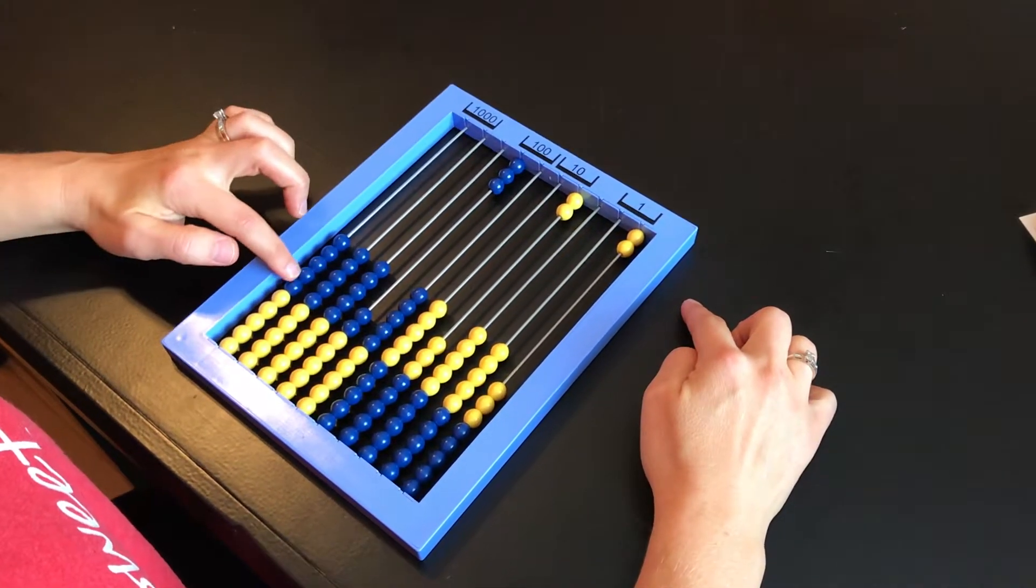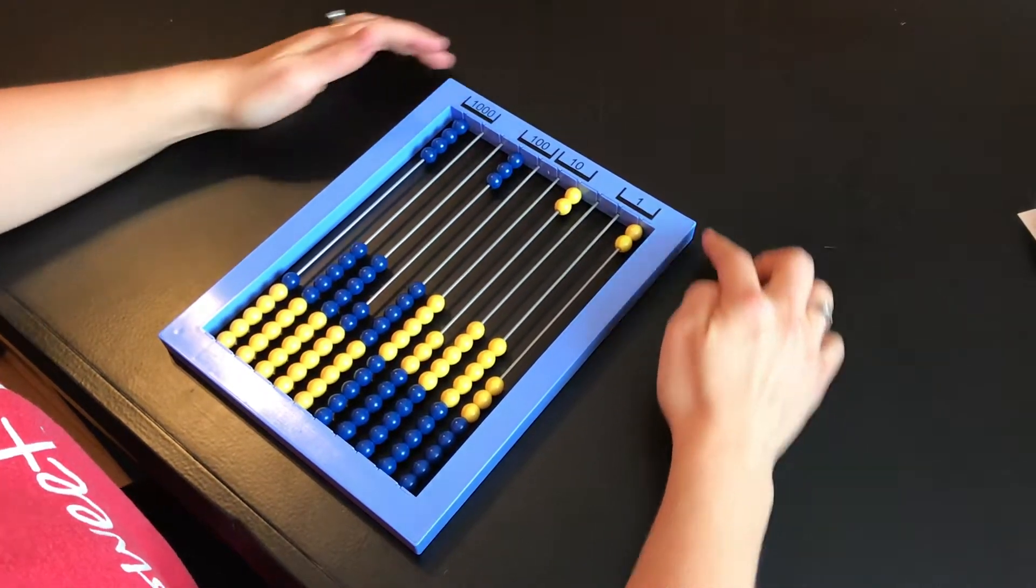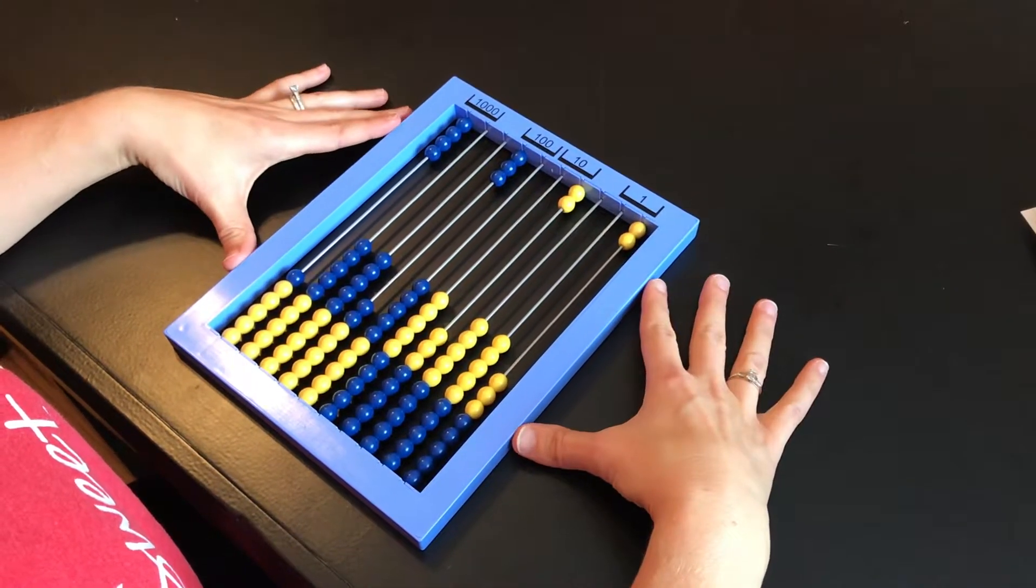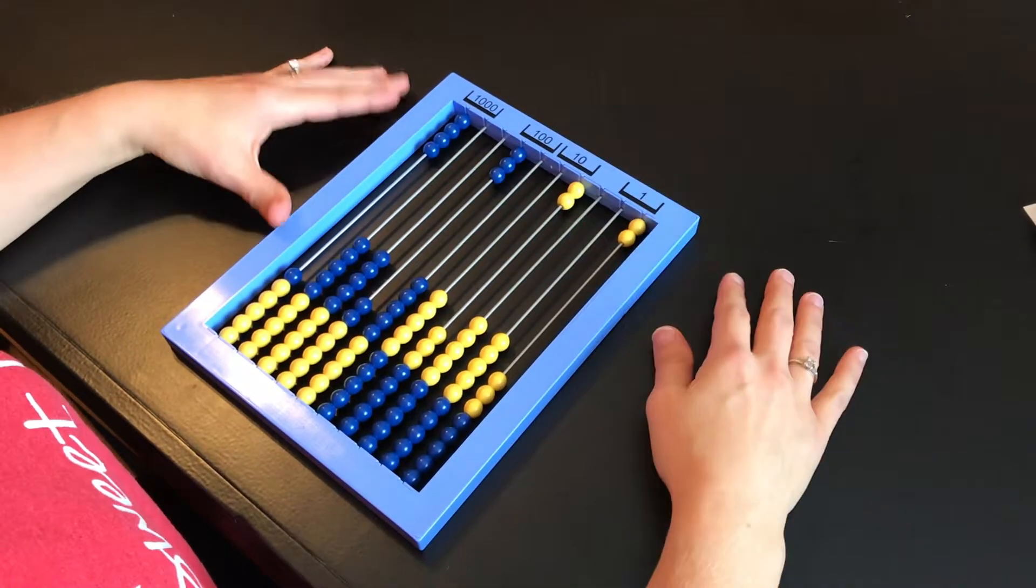This would be 300, 4,000. So this number would be 4,322. So it's a very nice, easy way for the child to use this and see the proper place values.